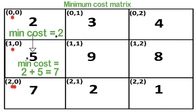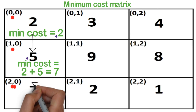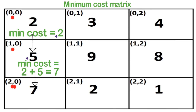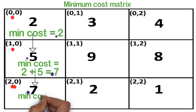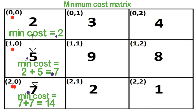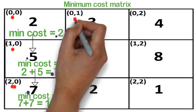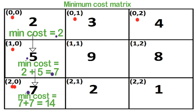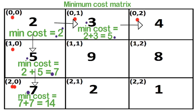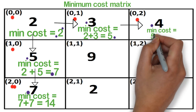The only way to reach cell 2,0 is from cell 1,0, so the minimum cost is 7 plus 7, which equals 14. Next we calculate the minimum cost for each cell in the first row. The only way to reach cell 0,1 is by going right, so the cost is 2 plus 3 equal to 5. Similarly, the minimum cost to reach cell 0,2 is 5 plus 4 equal to 9.